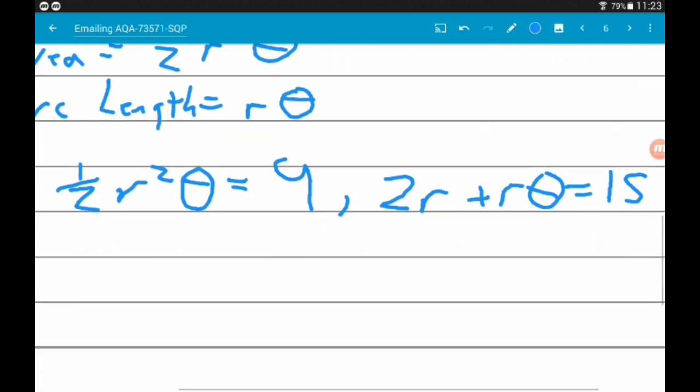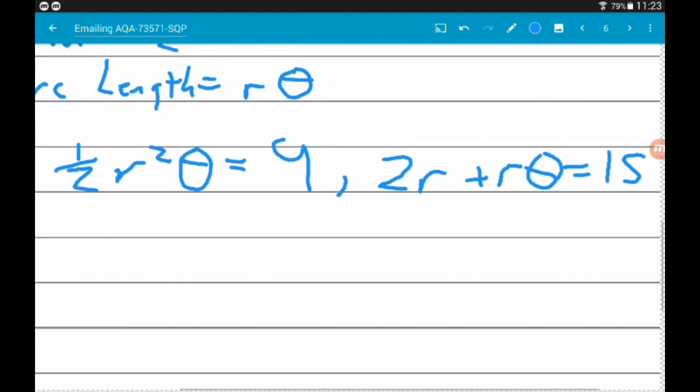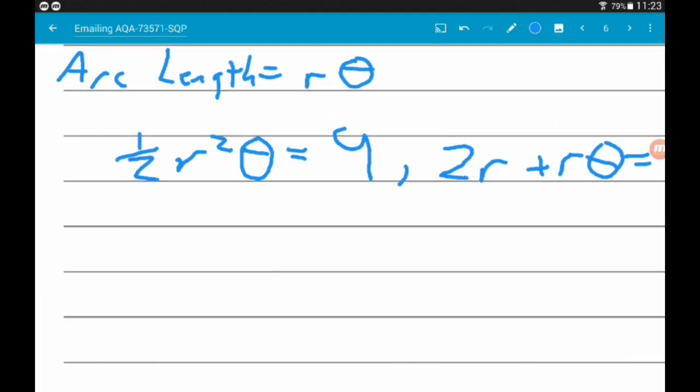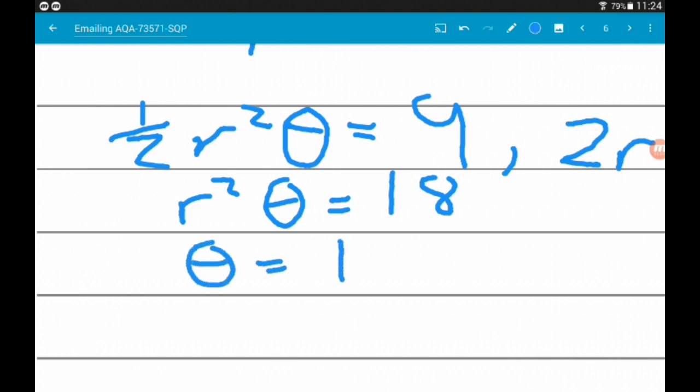So probably the easiest way to do this would be to use the equation on the left. So if we multiply by 2, we get R²θ = 18. And then θ = 18/R².